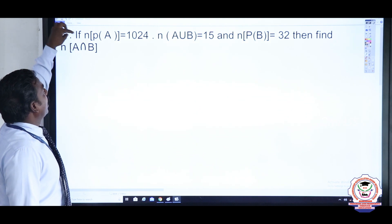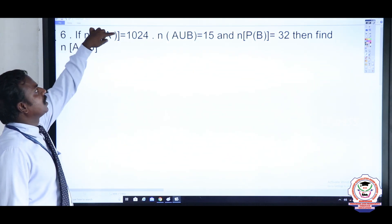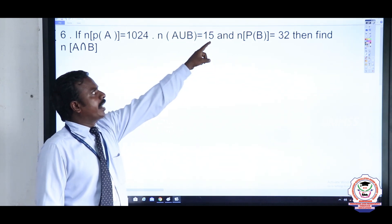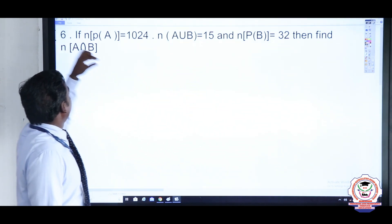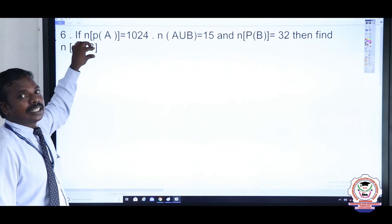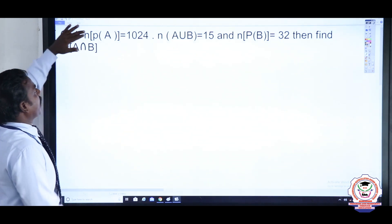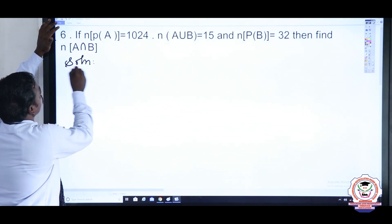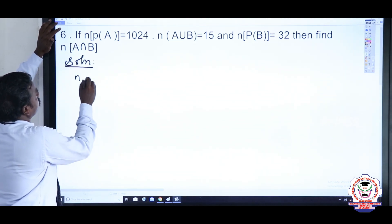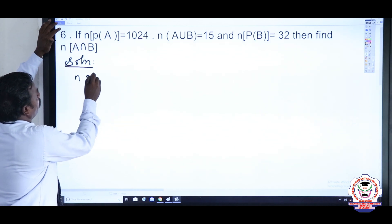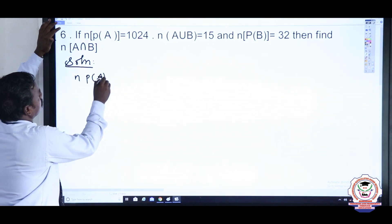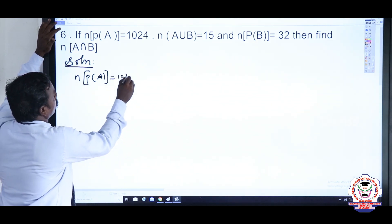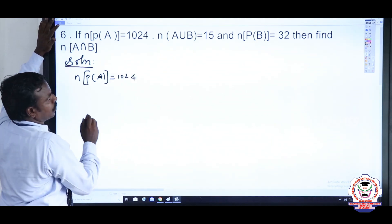Question number 6: if n(P(A)) = 1024 and n(A ∪ B) = 15 and n(P(B)) = 32, then find n(A ∩ B). First, we need to write the given values in the solution: n(P(A)) = 1024.